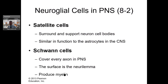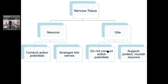Schwann cells and satellite cells are the peripheral nervous system neuroglia we just talked about. Schwann cells cover all the axons in the peripheral nervous system — their analogous structure in the CNS would be the oligodendrocyte. To summarize: your neurons and glia cells work together. Neurons conduct action potentials — they are arranged in nerves and tracts and are bundled together. The glia cells, the support cells, support and nourish the neurons. Think of it as support cells versus the cells actually involved in the stimulus and response.